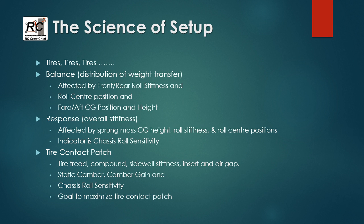The other thing with tires is how the vertical load translates to lateral grip — we'll talk about that in the next slide. Next thing is balance. This is the distribution of the weight transfer between the inside and outside tires and between the front and the rear. We can adjust and manipulate this to change the handling characteristics by changing our roll stiffness values, the roll center positions of the suspension, and the CG position and height, which involves changing and lowering components on the chassis.